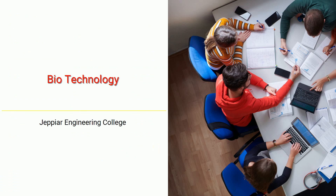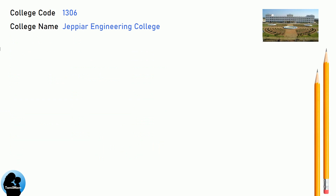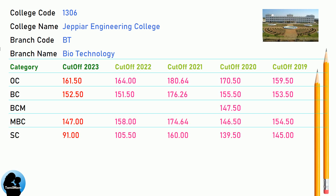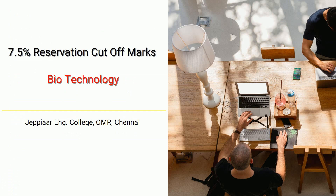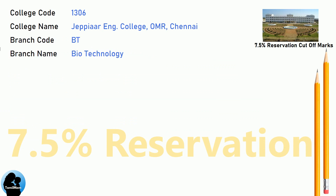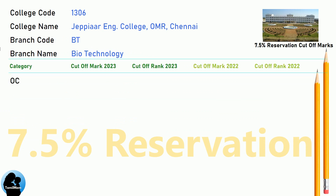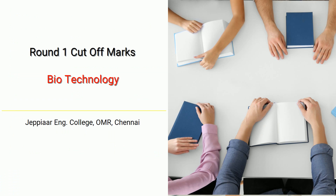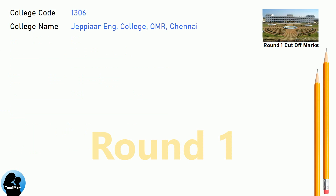DNA Cut-off for JPR Engineering College in Biotechnology. DNA 7.5 Reservation Cut-off for JPR Engineering College in Biotechnology. DNA Round 1 Cut-off for JPR Engineering College in Biotechnology.